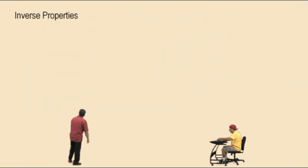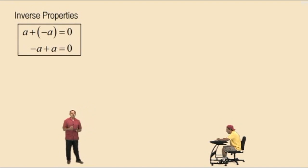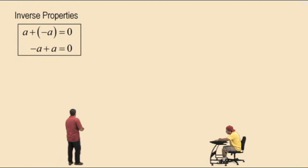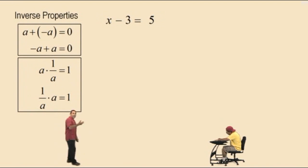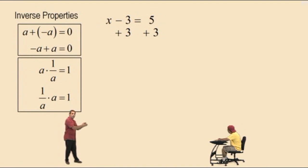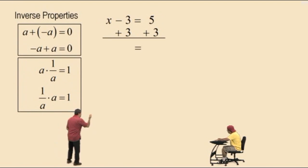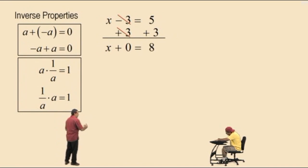Let's go to the inverse properties. The additive inverse: when you add opposites together, the sum is 0 — that's the inverse property for addition. In our equation, x subtract 3 is the same as x plus negative 3, and the additive inverse of negative 3 is positive 3. Adding them gives 0, so by the identity property x plus 0 is x, and we get x equals 8.